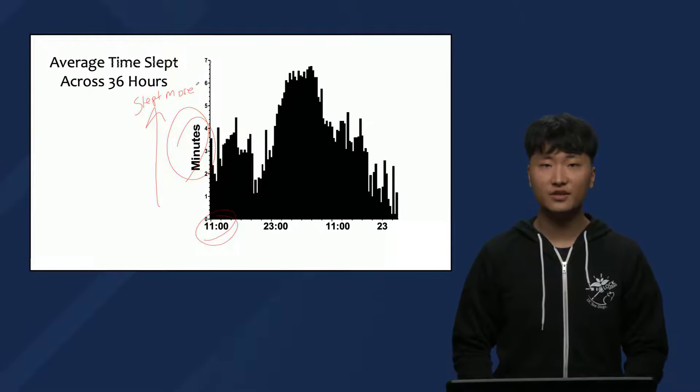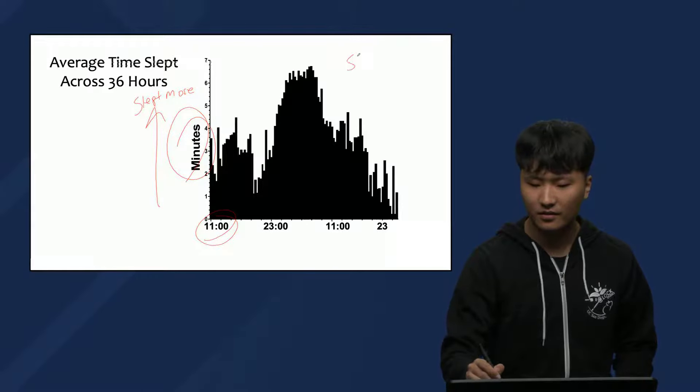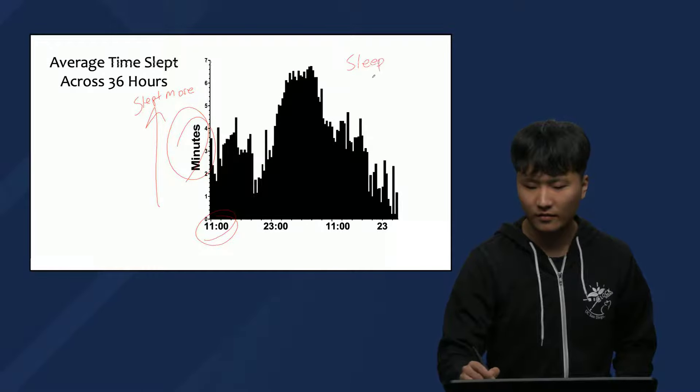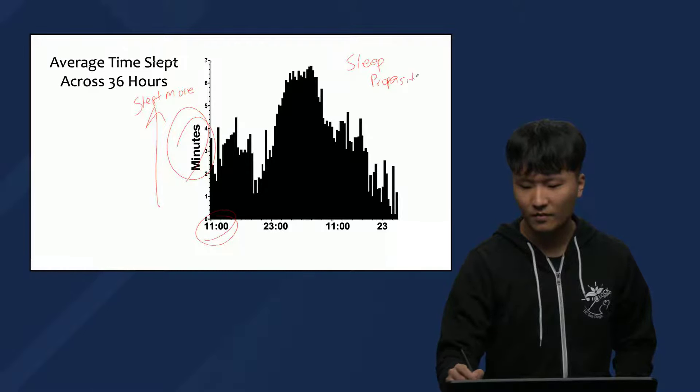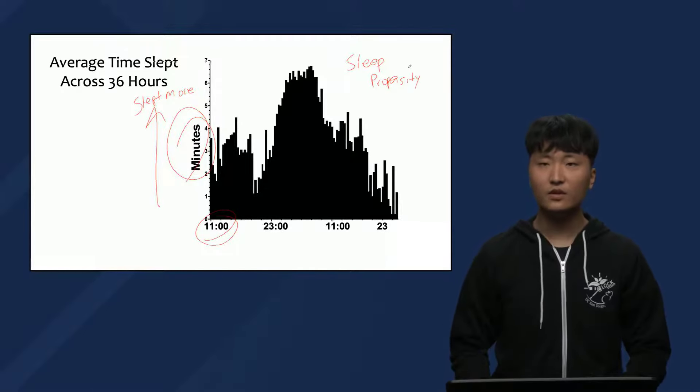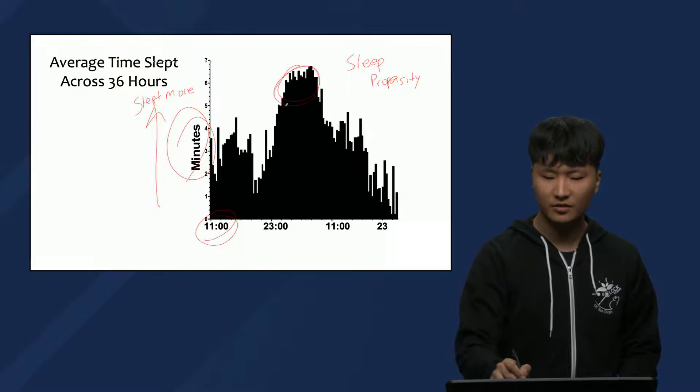So this is process C's effect on sleep, averaged over several people in the study. We can see that there is a rhythm in what is called sleep propensity, which is there are certain times of day where people are more likely to sleep than others.